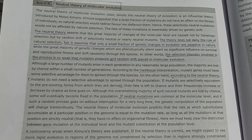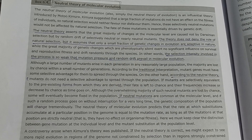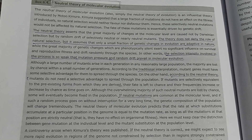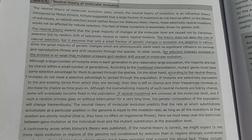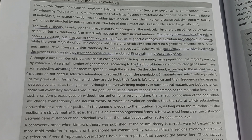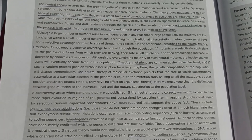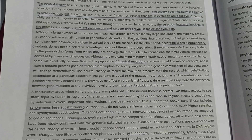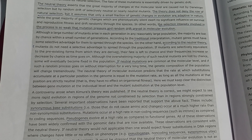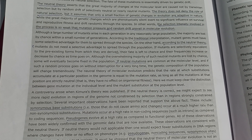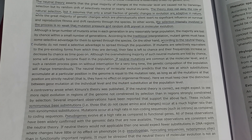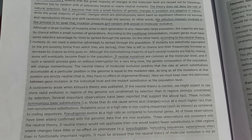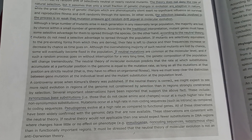This theory doesn't deny the role of natural selection, but it assumes that only a small fraction of genetic changes in evolution are adaptive in nature. The selection intensity involved is so weak that mutation pressure and random drift prevail in molecular evolution.